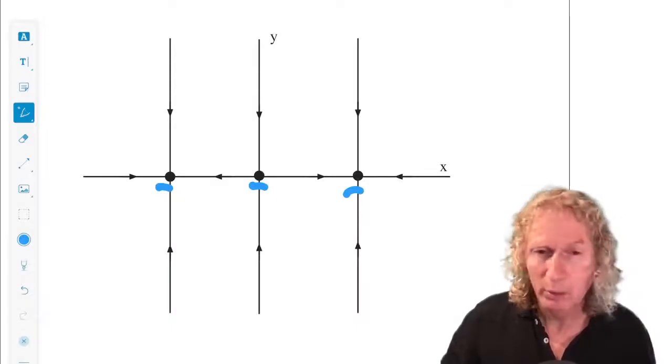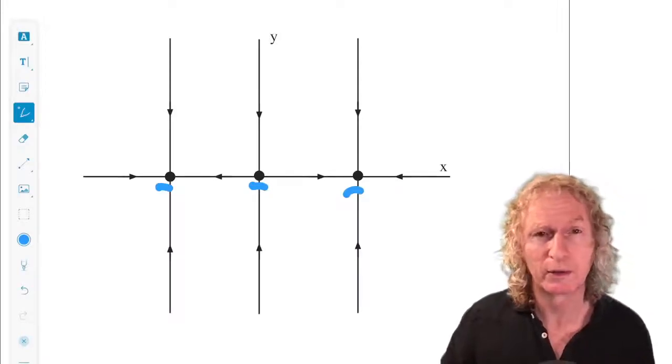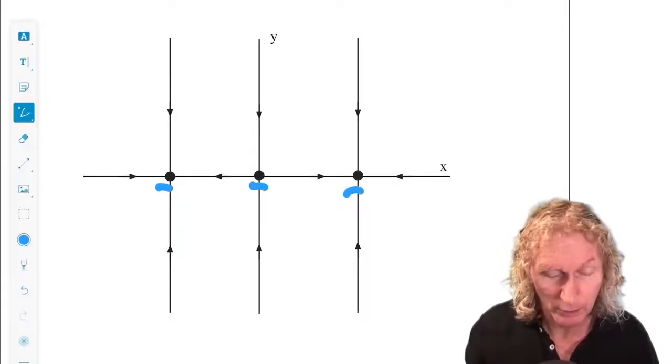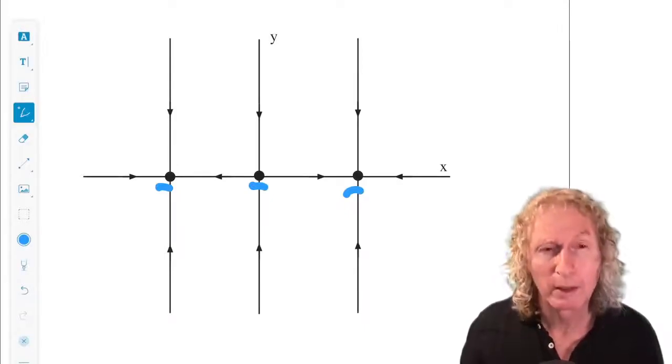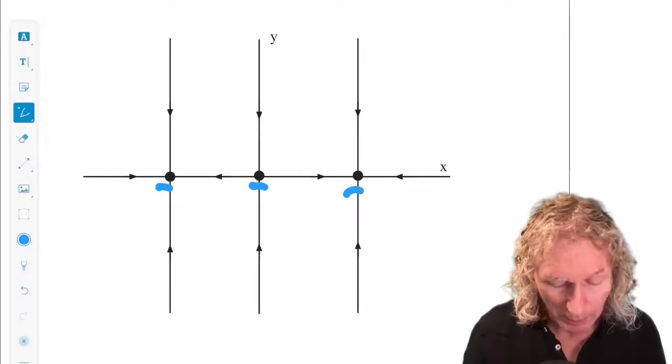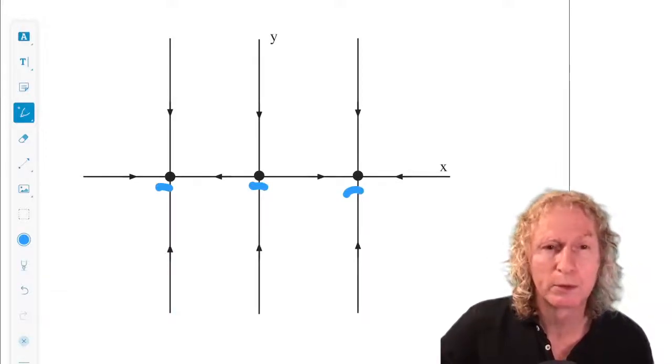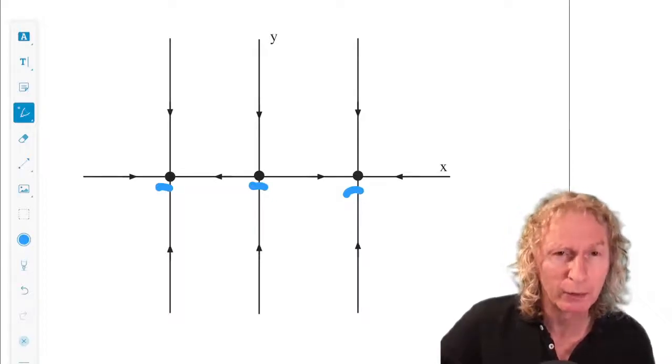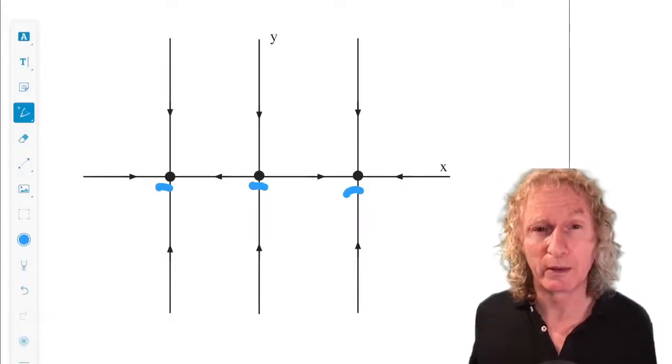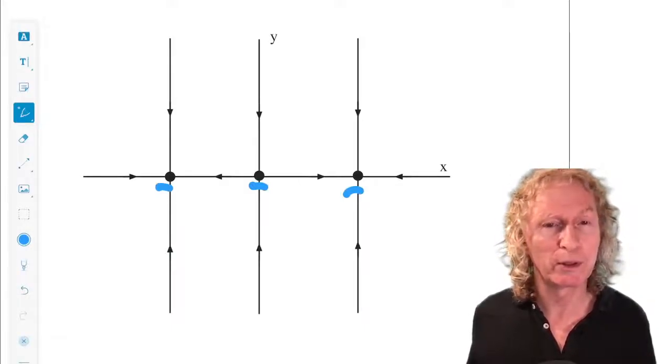Okay, and so the global stable manifold you can think of also as the basins of attraction in this case. Now, for the saddle in the middle at the origin, the global stable manifold is the x-axis. Now, the global unstable manifold is a little bit different. It's the finite open interval on the x-axis between minus one and plus one. We can't include the endpoints because those are fixed points. If we started on those, we would sit there and we would not decay to the origin exponentially as time went to minus infinity.